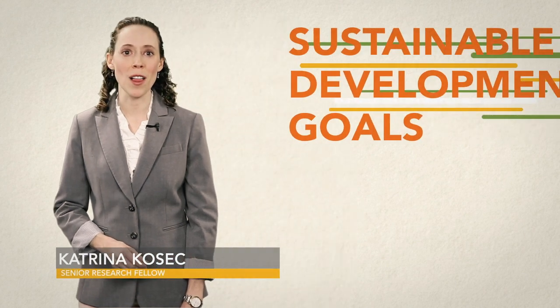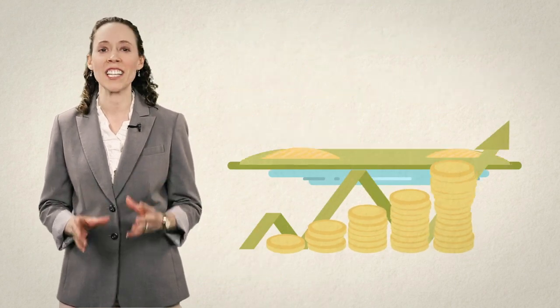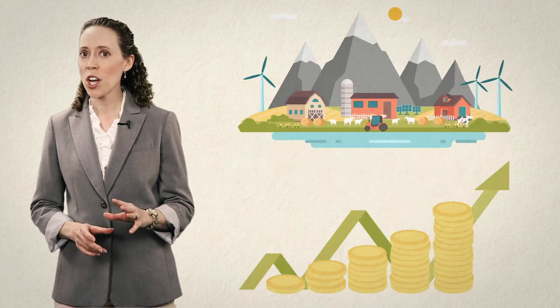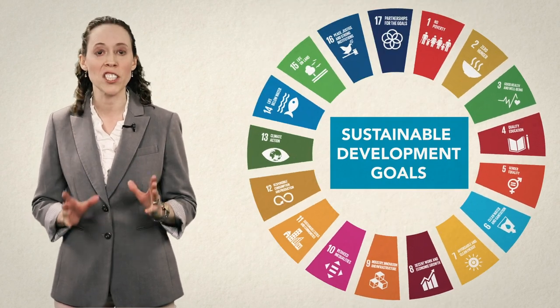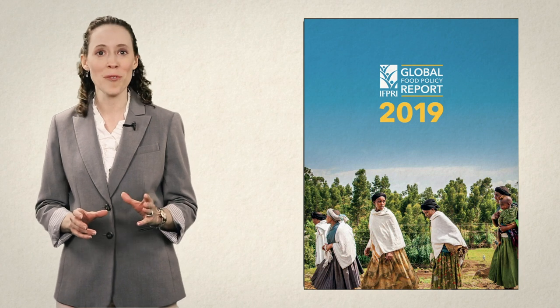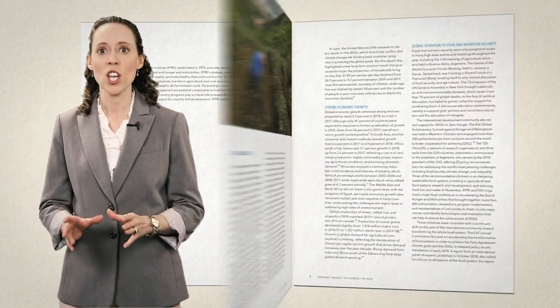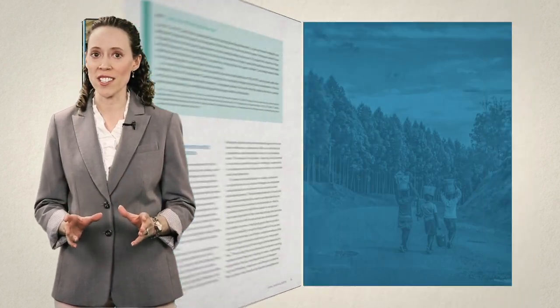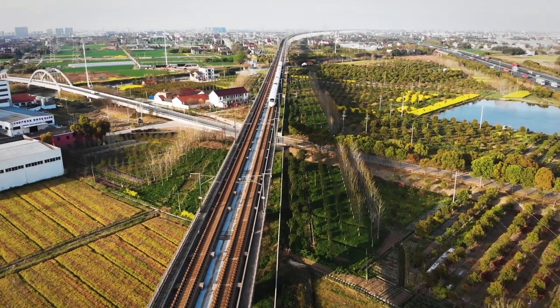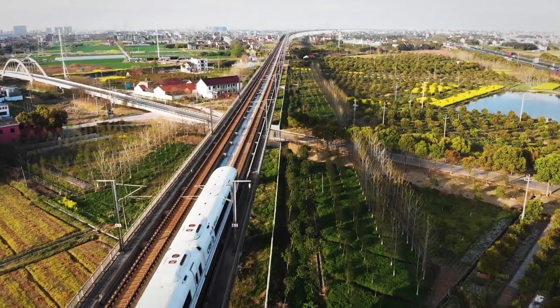We can't accomplish the sustainable development goals of eliminating poverty and hunger without investing in change for rural areas. Focusing on the challenges and opportunities in rural areas offers one of the most promising and practical ways to achieve all of the sustainable development goals. The 2019 Global Food Policy Report provides the knowledge and evidence to inform rural revitalization strategies that empower rural residents to move out of poverty, malnutrition, and a low quality of life. We have the knowledge — with political will and investment, we can tap into the vast potential of rural revitalization to improve the livelihoods of billions and ensure sustainable and inclusive growth that leaves no one behind.